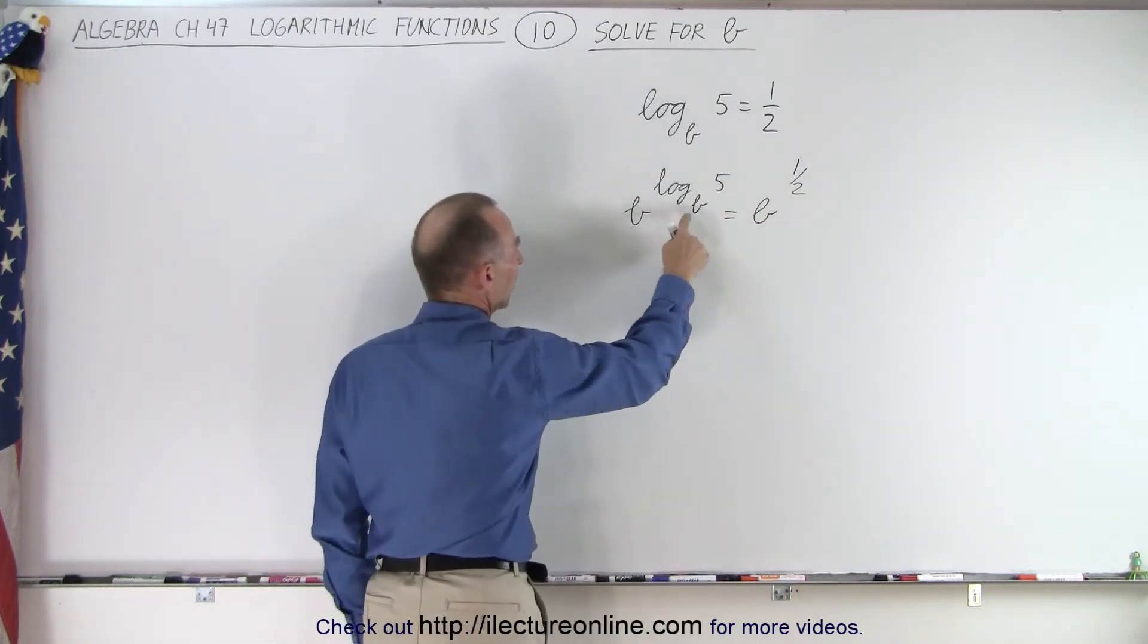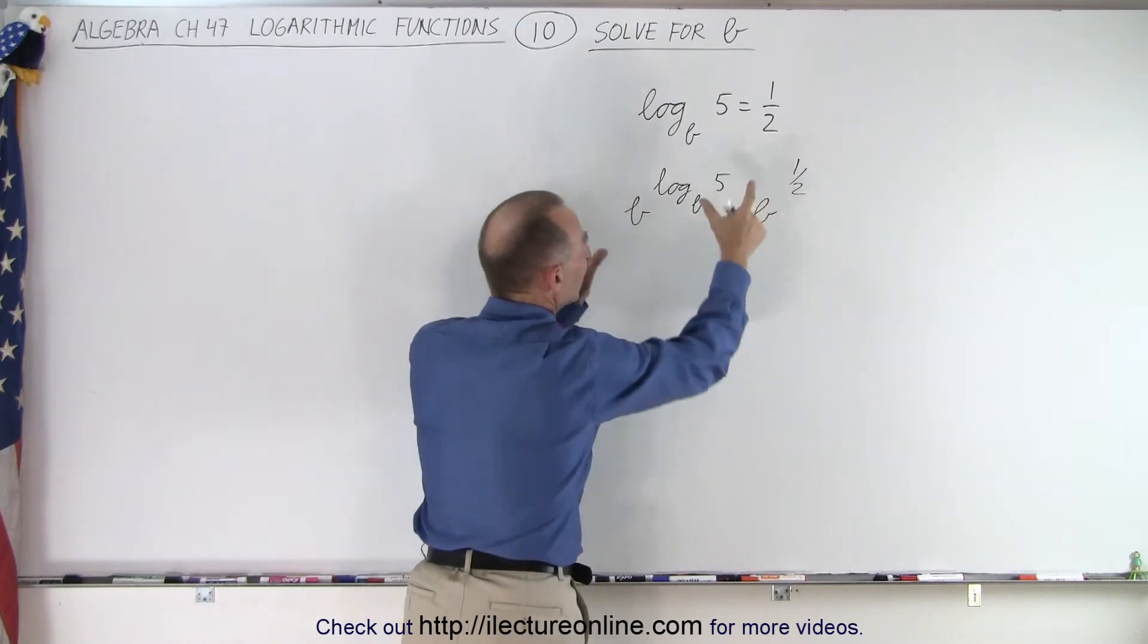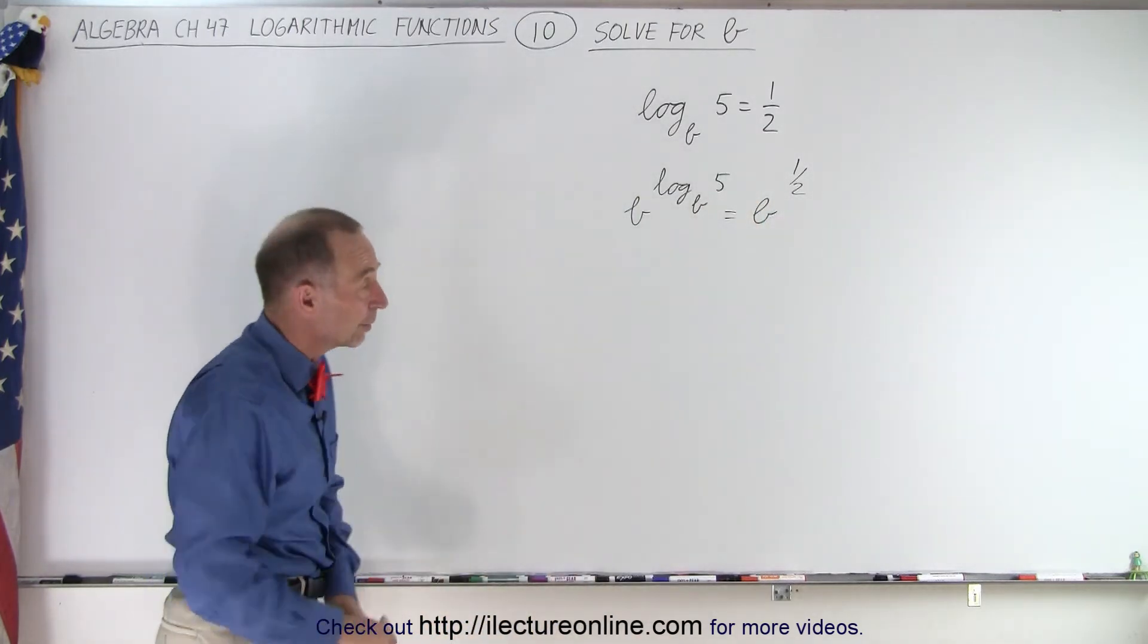Certainly, if the log base b of 5 equals 1 half, then they can be used as exponents and the left side still equals the right side.